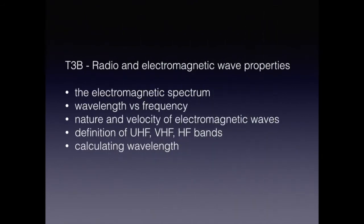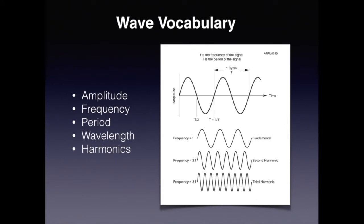Now we need to talk about radio and electromagnetic wave properties — in particular the electromagnetic spectrum, wavelength versus frequency, the nature and velocity of electromagnetic waves, and the definitions of UHF, VHF, and HF, and how to calculate the wavelength. Amplitude is the maximum extent of an oscillation or wave. Frequency is the number of cycles that occur within a second. A period is a portion of time and is also the reciprocal of a frequency. Wavelength is the distance a radio wave travels in one cycle. Harmonics is a signal from the transmitter or oscillator that occurs in whole number multiples — such as 2, 3, and 4 — of the desired frequency.